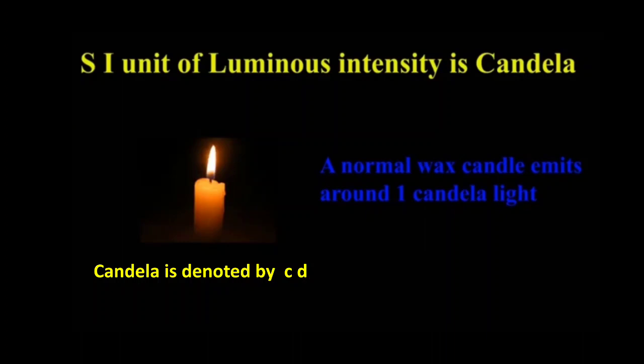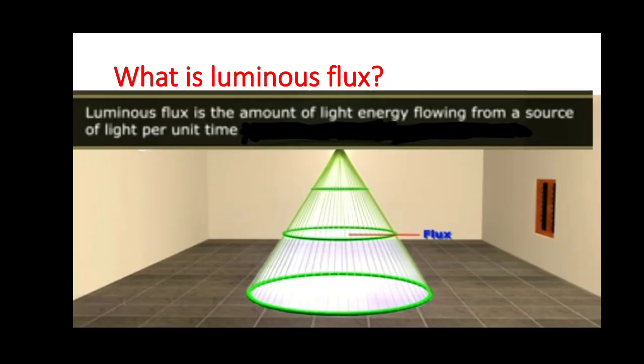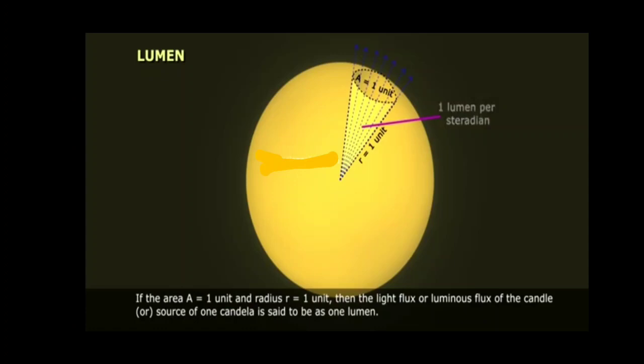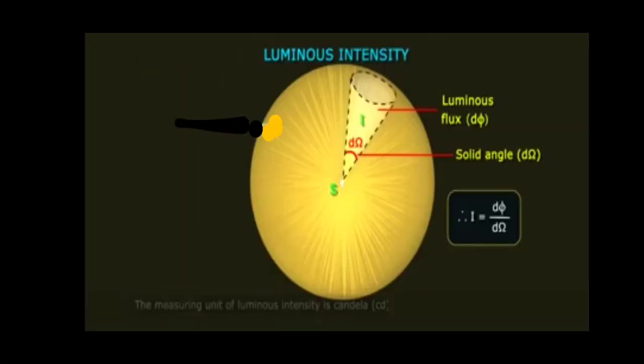A normal wax candle emits around one candela of light. Luminous flux is the amount of light energy flowing from a source of light per unit time, denoted by the Greek letter phi. The SI unit of luminous flux is lumen (lm). One lumen is defined as the luminous flux produced by a light source emitting one candela of luminous intensity over a solid angle of one steradian. If dφ is luminous flux over a solid angle dΩ, then luminous intensity I equals dφ/dΩ.